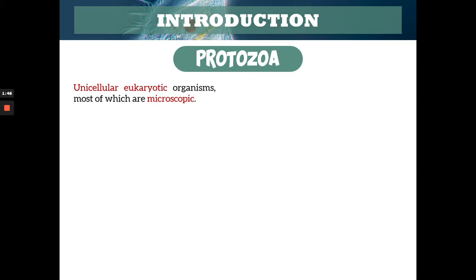When I say unicellular eukaryotic, they are single-celled but they have true organelles. I hope you already know the difference between prokaryotes and eukaryotes. For protozoa, they are eukaryotes — they have a true nucleus, all the membrane-bound organelles, and cell membranes. But they are only one cell — unicellular — and most of them are microscopic.